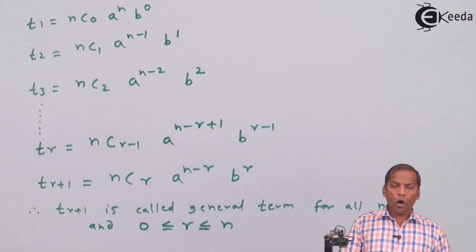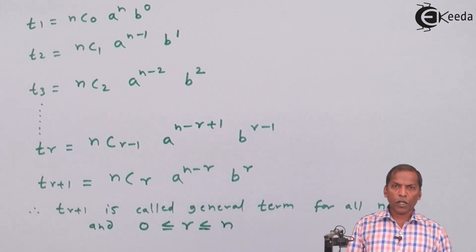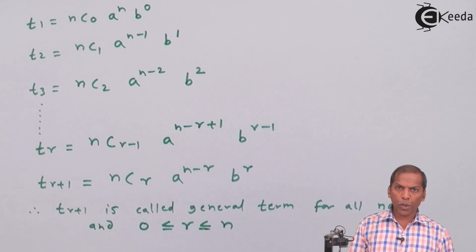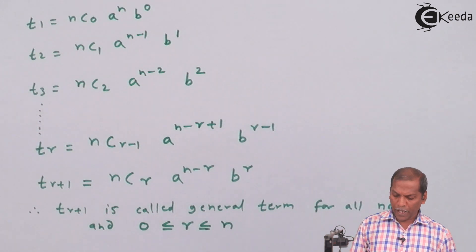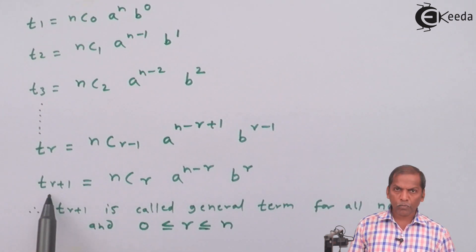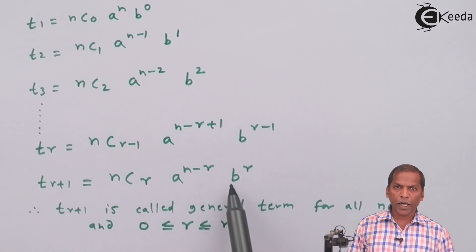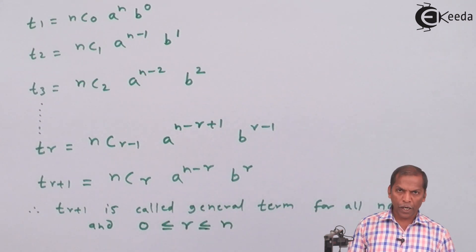So this is all about general term. While solving problems we use the formula that Tr+1 is equal to nCr into A to the power n minus r into B to the power r. Thank you.